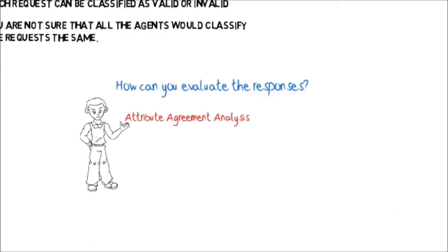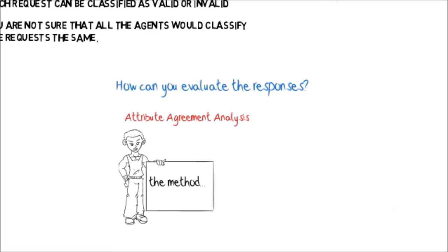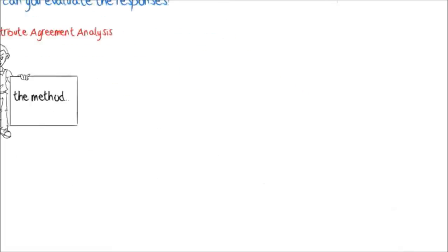An Attribute Agreement Analysis can help us understand and ensure the consistency and correctness of the agents' responses. Let's see the method to conduct an Attribute Agreement Analysis for binary data. You need to select a minimum of 50 items from the process. For our scenario, we need 50 different requests received from various customers, and each request will have a unique identifier.